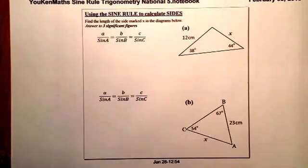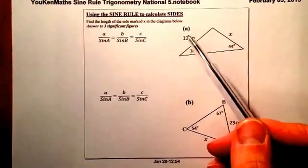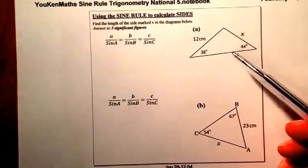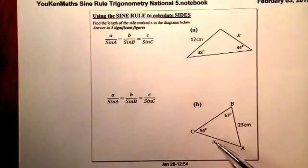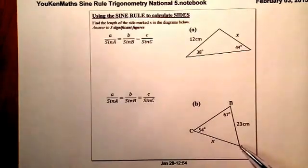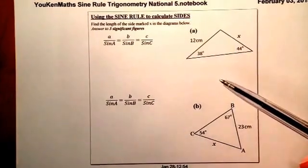Today we're looking at the basics of using the sine rule to calculate sides in non-right-angled triangles. What we're going to do is work out the value for x, so that'll be this side here and x the side here, and we're going to round the answers to three significant figures.